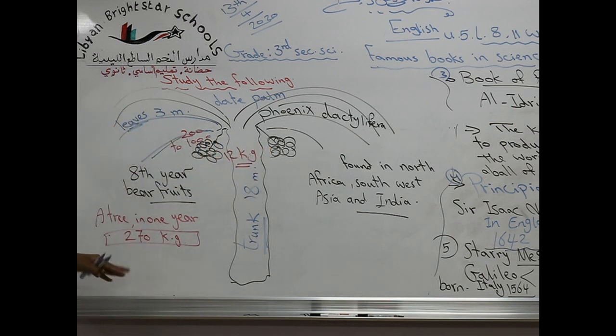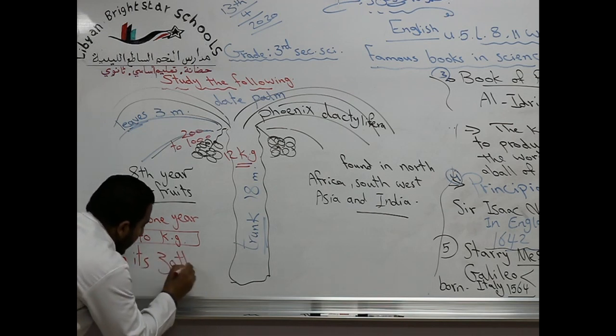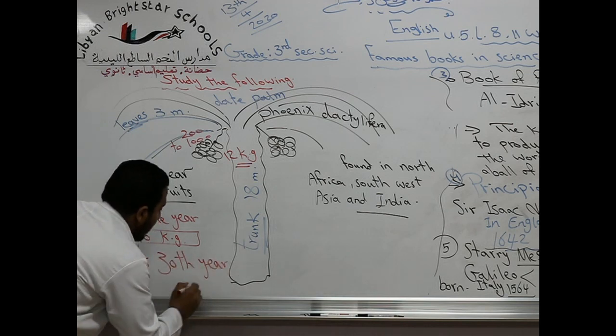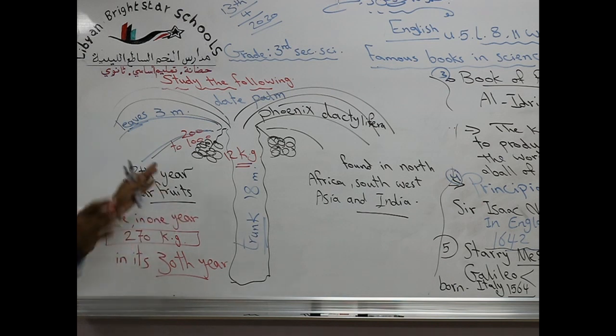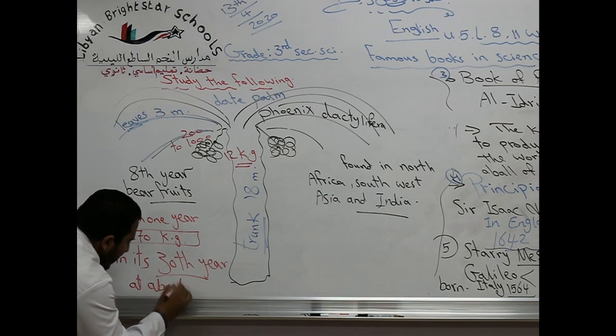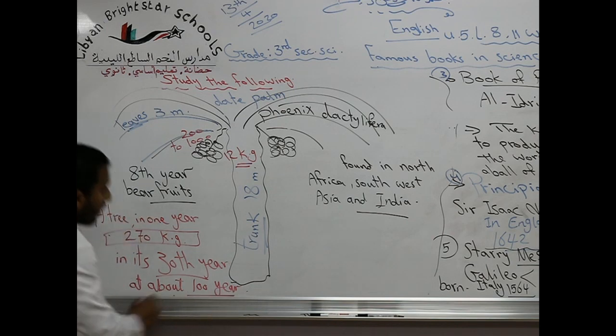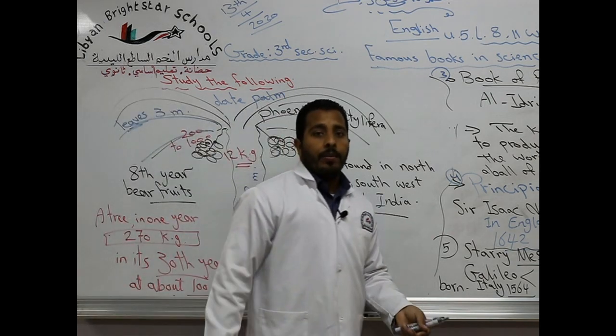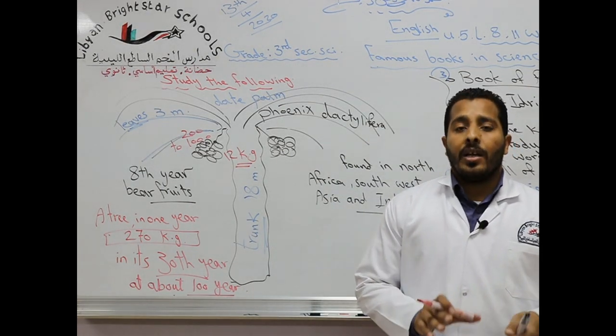It reached maturity in its 30th year and started to decline at about 100 years. That's a summary of the date palm. It's Allah who guides us to the date birth. Thanks for listening and goodbye.